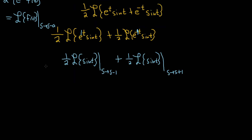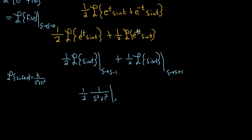The formula for the Laplace transform of sine kt is k over s squared plus k squared. In our problem, k is equal to one, so it's one-half times one over s squared plus one, with the shift taking s to s minus one. And for the second term, it's plus one-half times one over s squared plus one, with the shift taking s to s plus one.